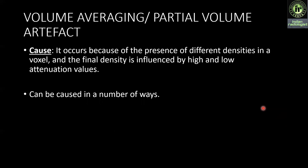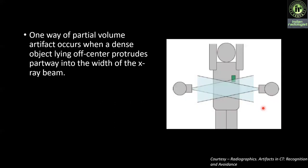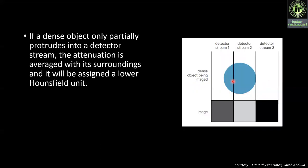Next artifact is volume averaging or partial volume artifact. It occurs because of the presence of different densities in a voxel, and thus the final density is influenced by high and lower attenuation values. One way partial volume artifact occurs is when a dense object lying off-center protrudes partly into the width of the X-ray beam. When the tube points from left to right, the object is within the beam and seen by the detector, while when the tube points from right to left, the object is outside the beam and not seen. Another way is if a dense object partially protrudes into a detector channel, the attenuation is averaged and it will be assigned a lower Hounsfield unit.